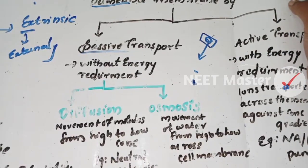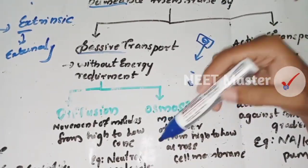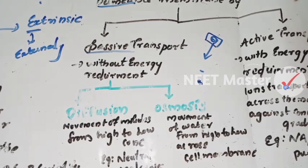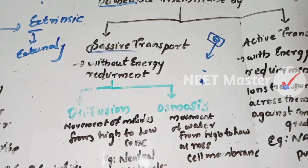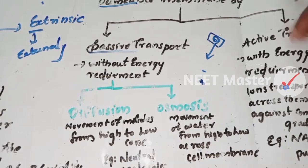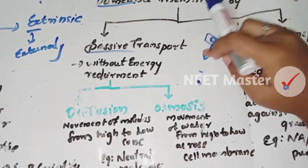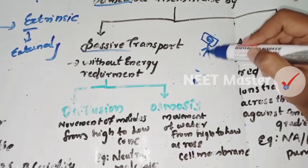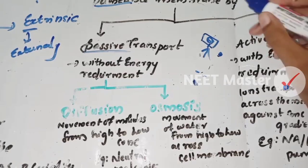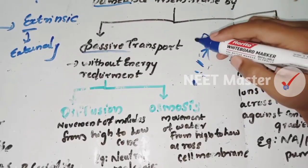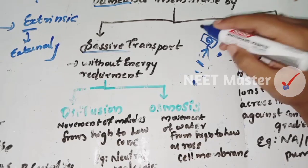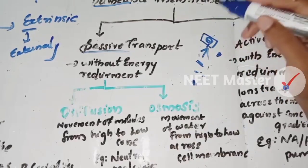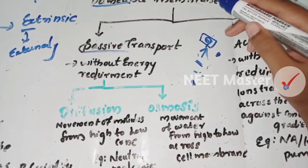Active transport moves ions across the membrane against the concentration gradient — from low to high concentration. Because molecules move against the gradient, energy is required. An example of active transport is the sodium-potassium pump.